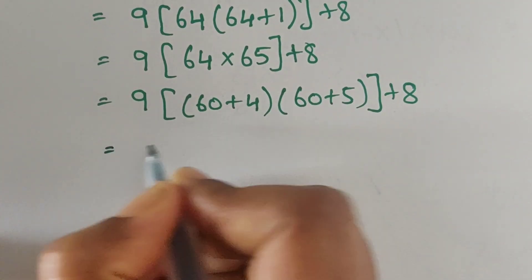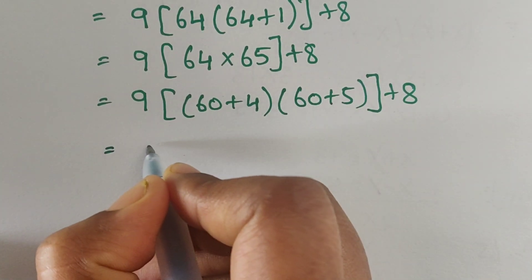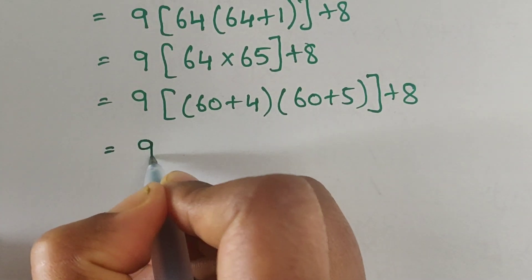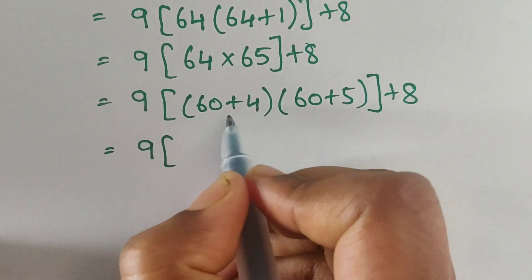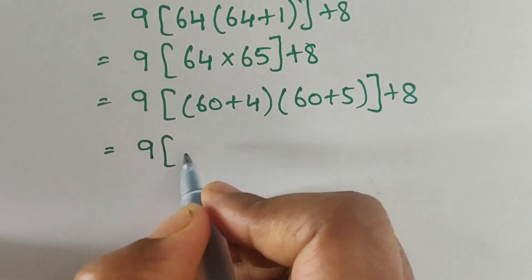So now, multiplying these two terms: 60 times 60 — 6 times 6 equals 36, with two zeros, giving 3,600. Plus 60 times 5 equals 300. Plus 4 times 65 equals 260. Adding all four terms gives us 4,160.